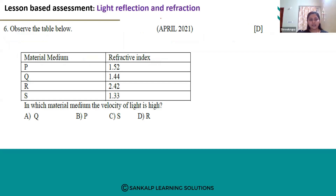Hello everyone. Let's see question number 6. Observe the table below. Here we have four material mediums with their respective refractive indices. In which material medium is the velocity of light the highest?